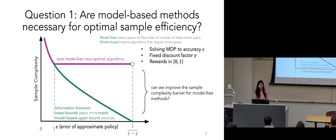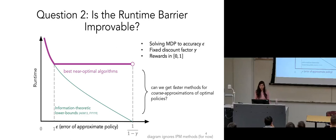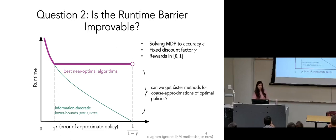Can we improve the sample complexity barrier for model-free methods and close the gap with model-based? This is also closely related to the runtime question. Looking at the same curve with runtime on the y-axis, we no longer have optimal algorithms in terms of runtime — model-based methods with optimal sample complexity don't immediately lead to runtime improvements. A natural question is: can we get faster methods for coarse approximations in the large epsilon regime? I'm ignoring interior point methods for now, but I'll discuss those, as they complicate the picture a bit.